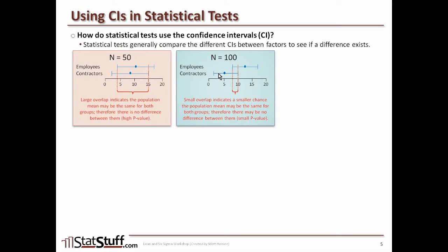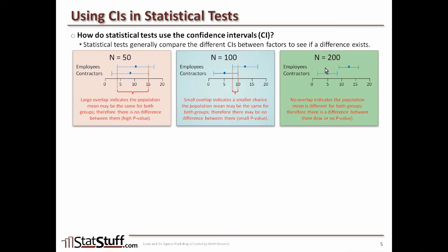We can't say exactly what the p-value is — that's part of the calculation for the statistical test. But the point is that the more samples you get, you're shrinking or making your confidence interval more narrow. By making it more narrow, there's less overlap between the compared groups. If we doubled our sample size even more, our averages haven't moved much, but we've made our confidence intervals even more narrow. When there's no overlap, our p-value is probably going to be very low or zero, because we have enough data to be at least 95% confident there is a clear difference between the two groups. Now we have enough data to prove the difference between employees and contractors.